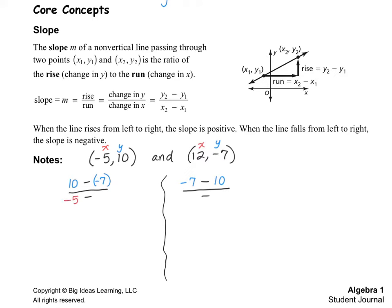The other side flips around, so negative 7 and 10 on top, and 12 minus negative 5 on the bottom. Notice that I just flipped them around on both. Let's go ahead and solve both of these.